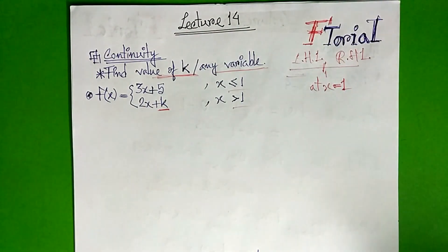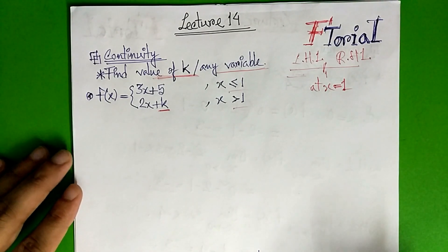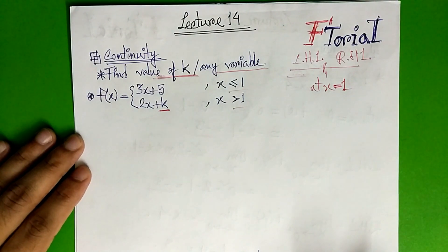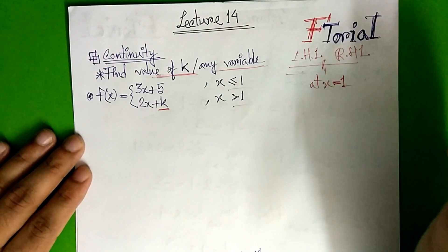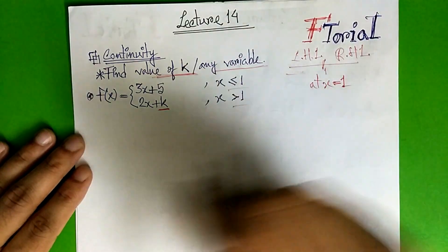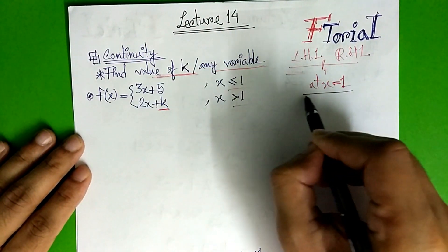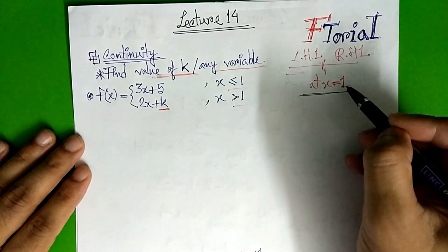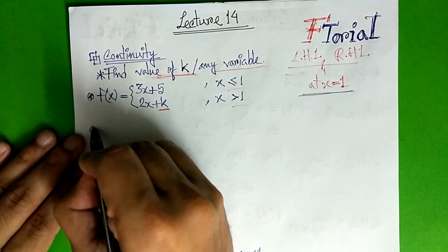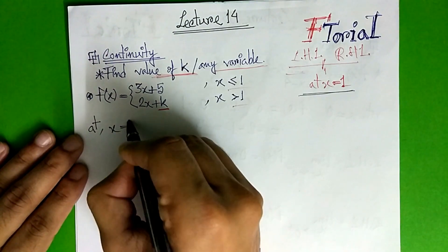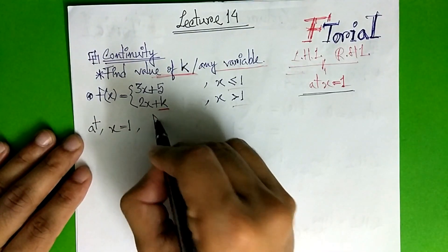Now let's see problem 2. So this is problem 12 — I will explain to you about it. If you have a problem with 12, we will start with the point x equals to 1. So x equals to 1, at point x equals to 1.